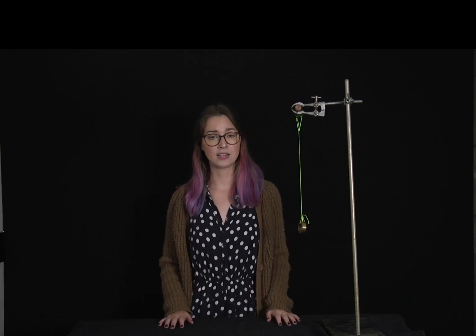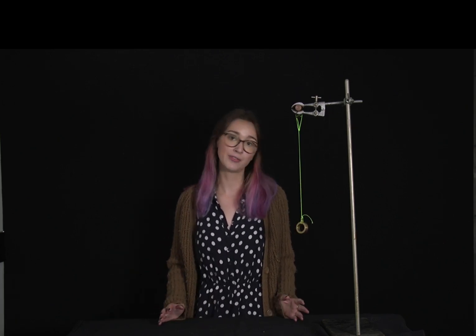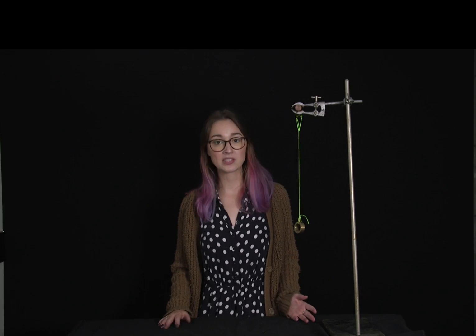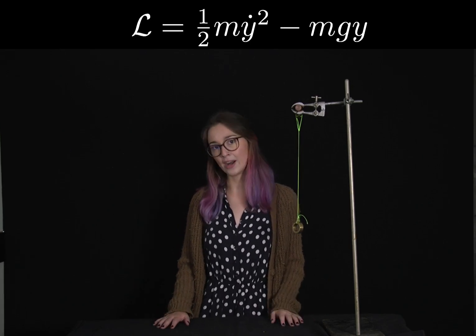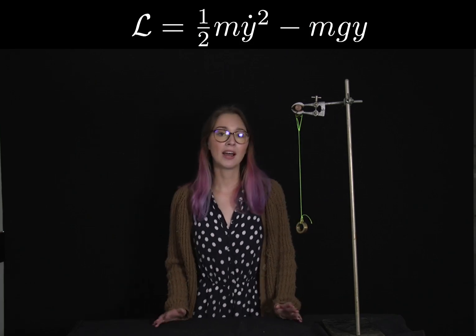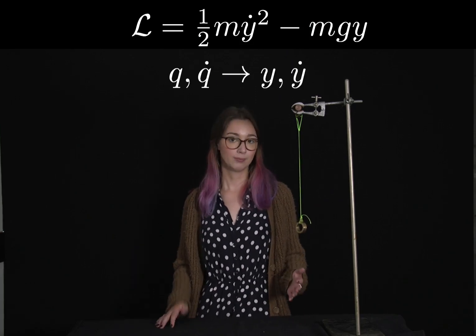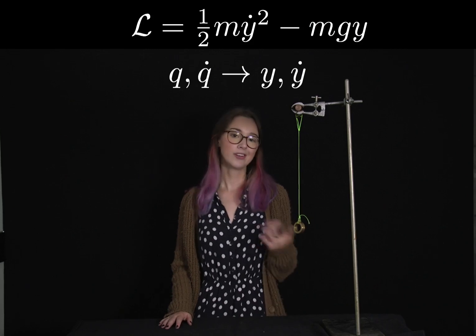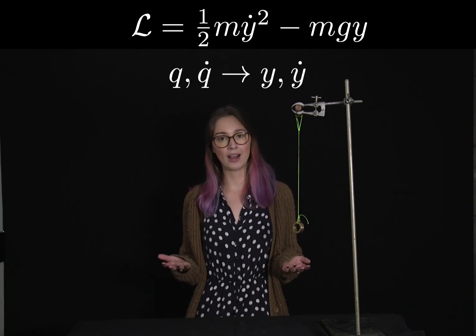If we're thinking about a ball falling down under the influence of a gravitational field, remember our Lagrangian was L equals a half m y dot squared minus mgy. So our coordinates are y and y dot. Instead of writing Q, we can just write y and y dot.